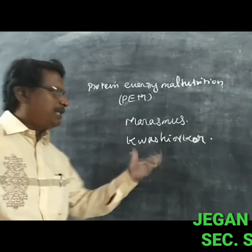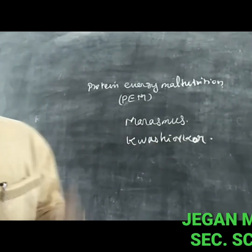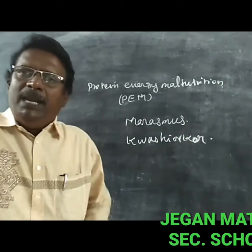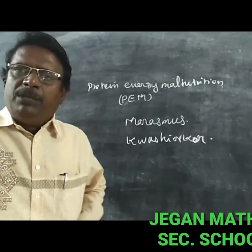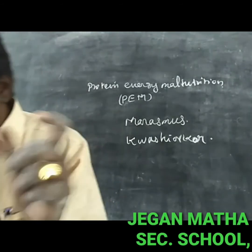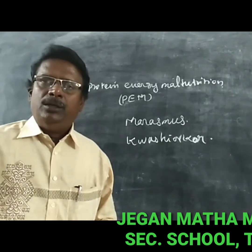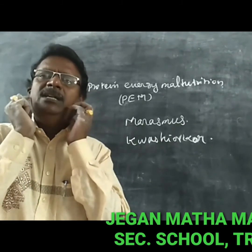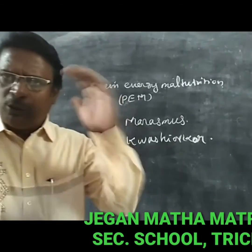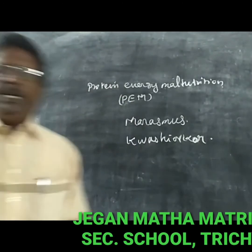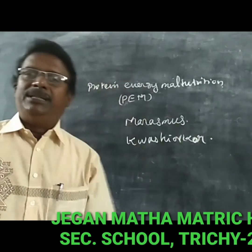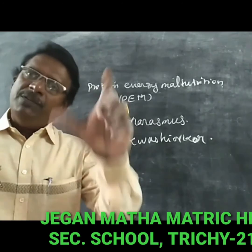The symptoms of kwashiorkor include dry skin, a bloated belly where the abdomen becomes very enlarged in size, oedema in the leg and face, abnormal muscle growth in the face and leg, arrested growth, changes in hair color, and general weakness of the body.